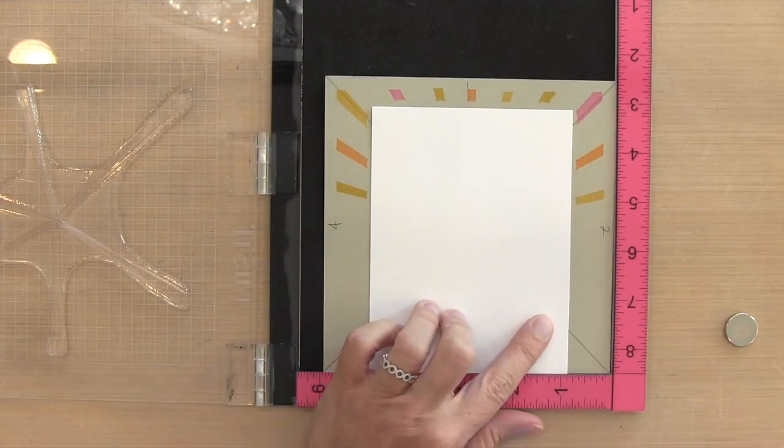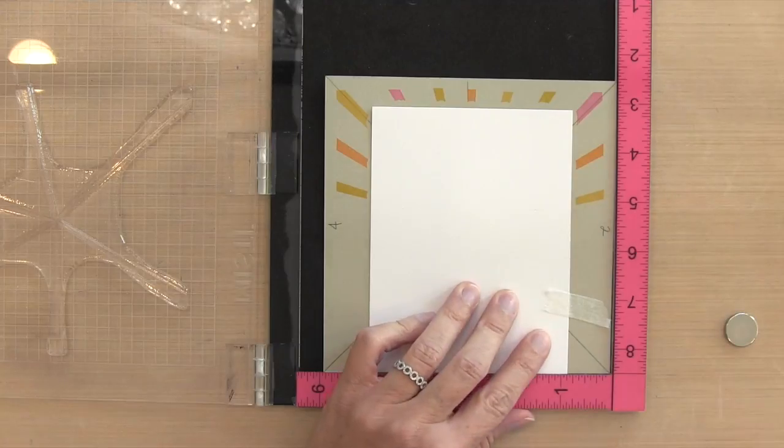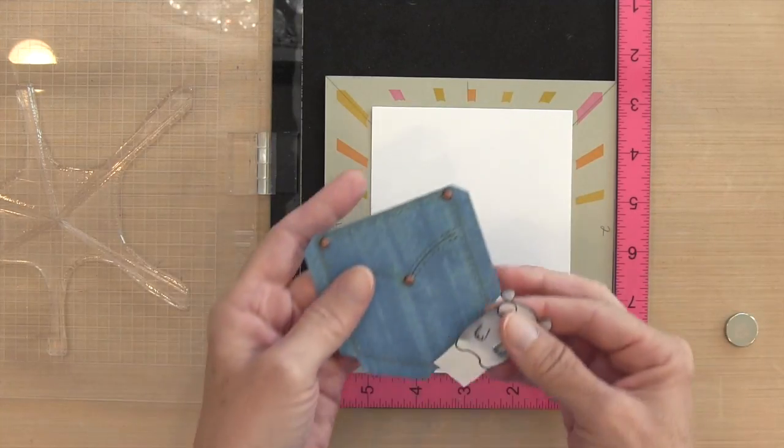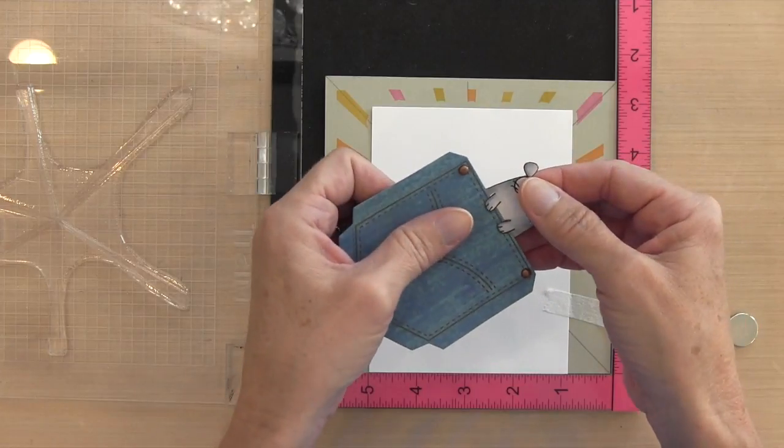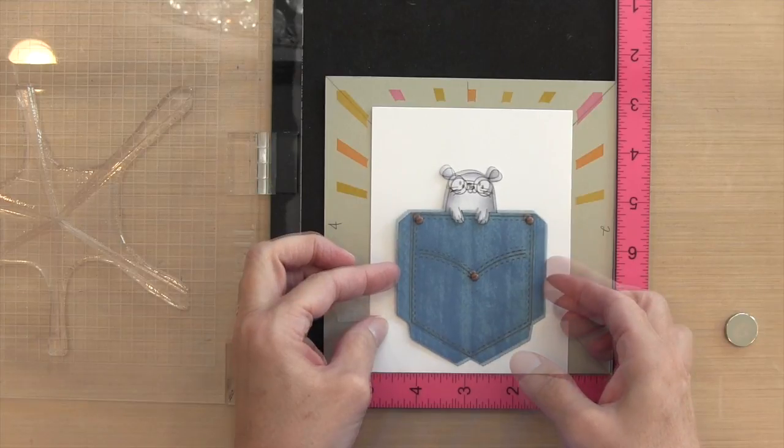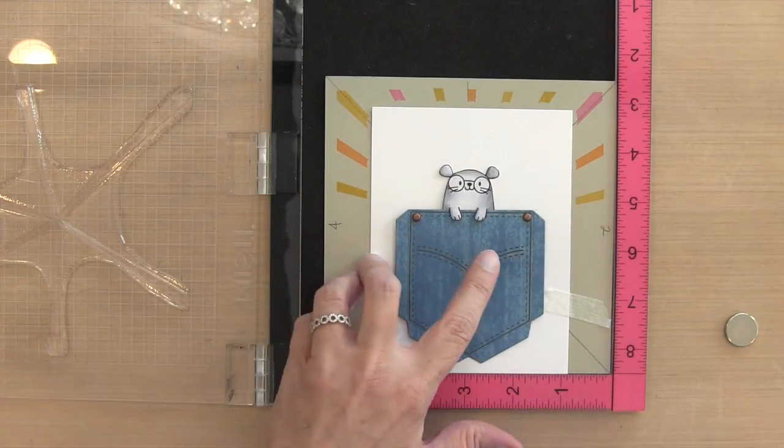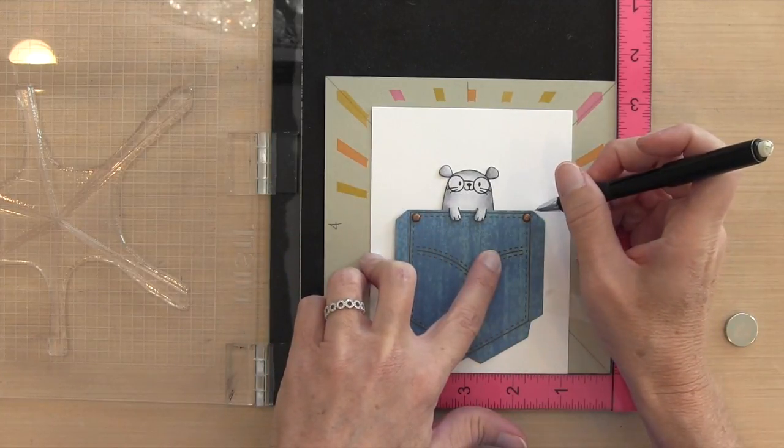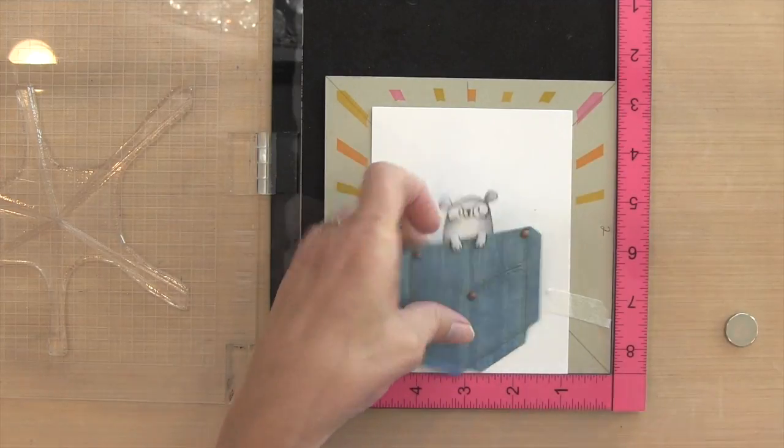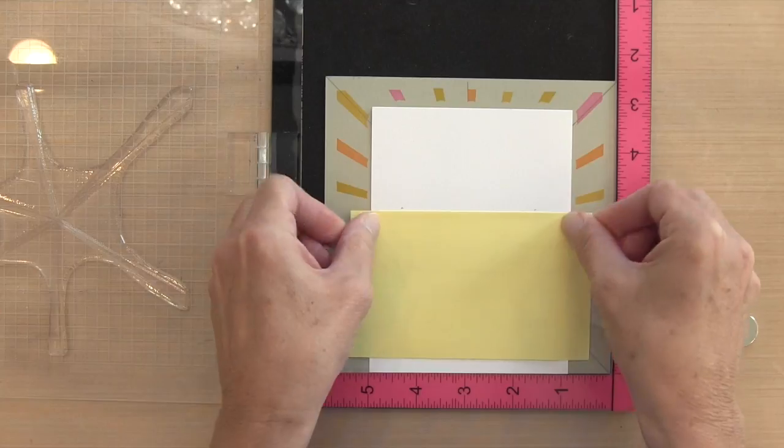So I have a piece of Neenah cardstock at 4 and 1/8 by 5 and 3/8. And I'm going to adhere it to the bottom of this template with some surgical tape. And then I'm going to adhere my mouse quickly to the pocket just for placement purposes. I'm just trying to figure out where I want my sunshine rays to be. So my pocket, I'm going to draw a line at the top of my pocket. And that's where I want my rays to stop. So I'll put a post-it just underneath those pencil guidelines.